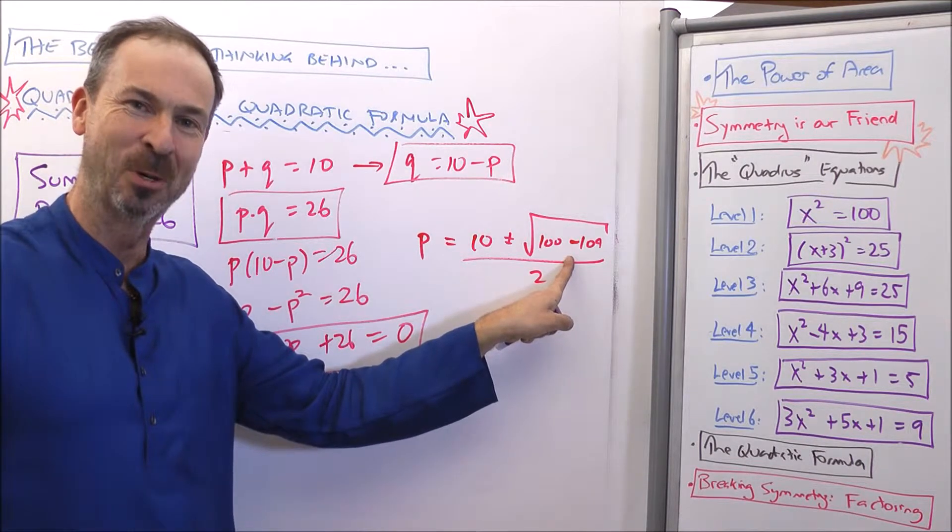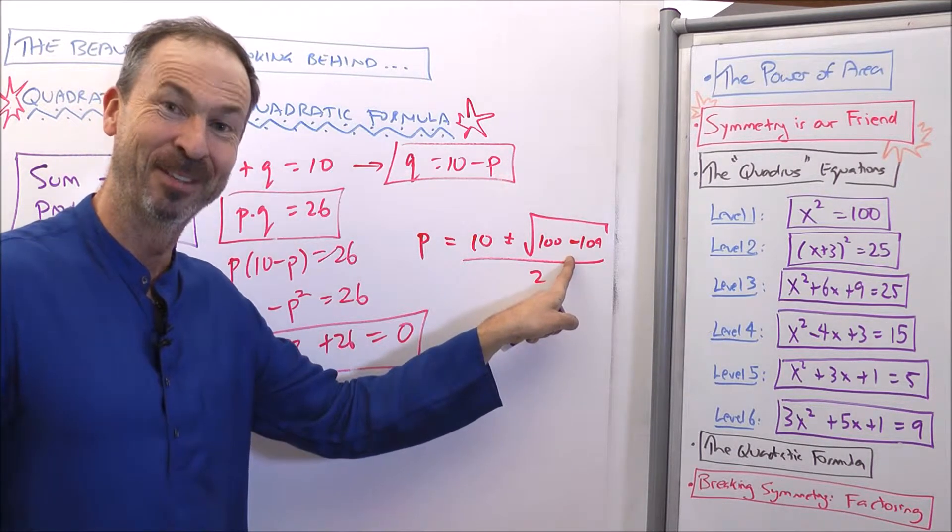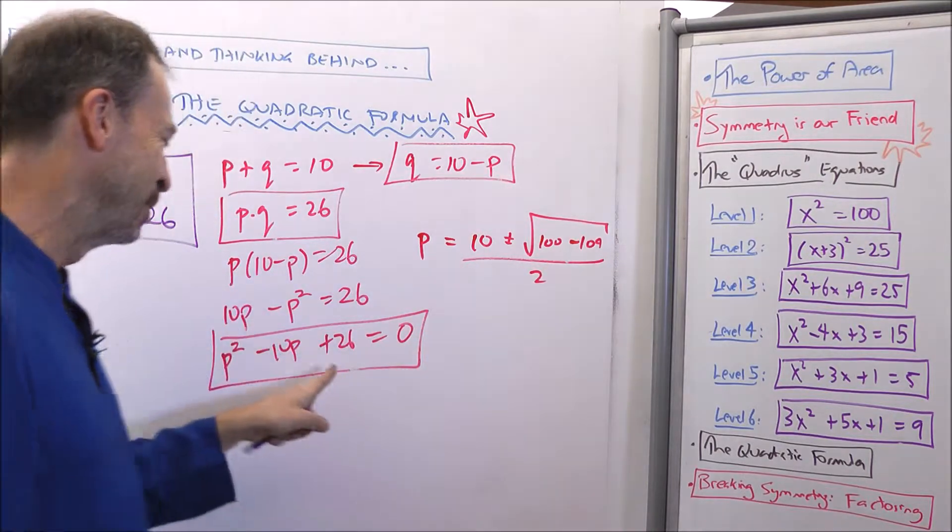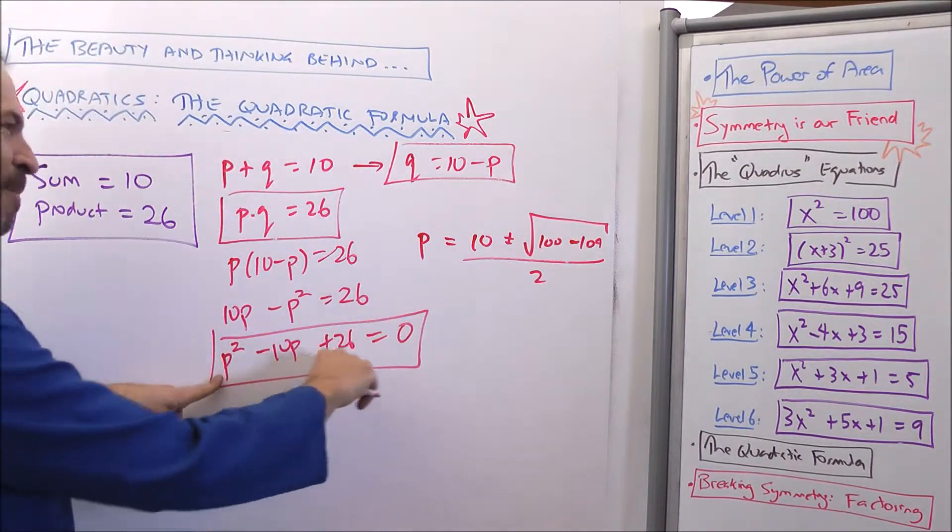Square root of a negative number. Square root of negative 4. Cannot do it. Zero solutions. Do you see that?